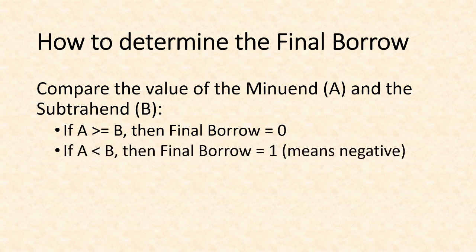Or else, if A is less than B, then the final borrow will have the value 1. In this example, it will mean that the difference is a negative number. So it only happens if the minuend is less than the subtrahend. That's how we determine the final borrow.